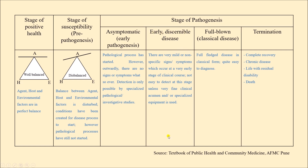Then there is early discernible changes, where mild and non-specific signs and symptoms develop. It is not very easy to detect the disease at this stage unless the person has excellent clinical acumen or specialized equipment is available. After this there is full-blown or classical disease, where detection is quite easy based on clinical features and investigative procedures. Finally there is termination of the disease — either complete recovery, a chronic status leading to different kinds of disability, or death. This is all about natural history of disease: what it is, its different stages, and what happens in the stage of pre-pathogenesis and pathogenesis.